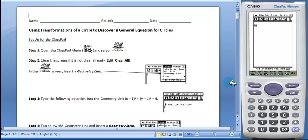Students will then type this equation into the geometry link. So we have x minus 1 quantity squared plus y minus 1 quantity squared equals 4.